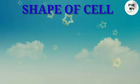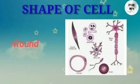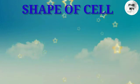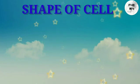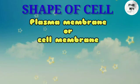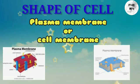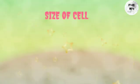Shape of cell: cells are of various shapes, such as round, spherical, and elongated. Cells are usually covered by a membrane called the plasma membrane or cell membrane, which gives proper shape to the cell.